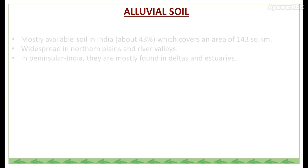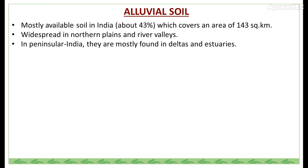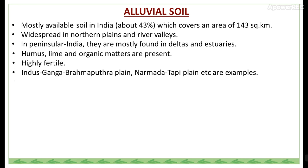Alluvial soil is the most available soil in India, covering about 43% of the area — approximately 143 km². It is widespread in the northern plains and river valleys. In peninsular India, it is mostly found in deltas. Humus, lime and organic matter are mainly present in alluvial soil, making it highly fertile.